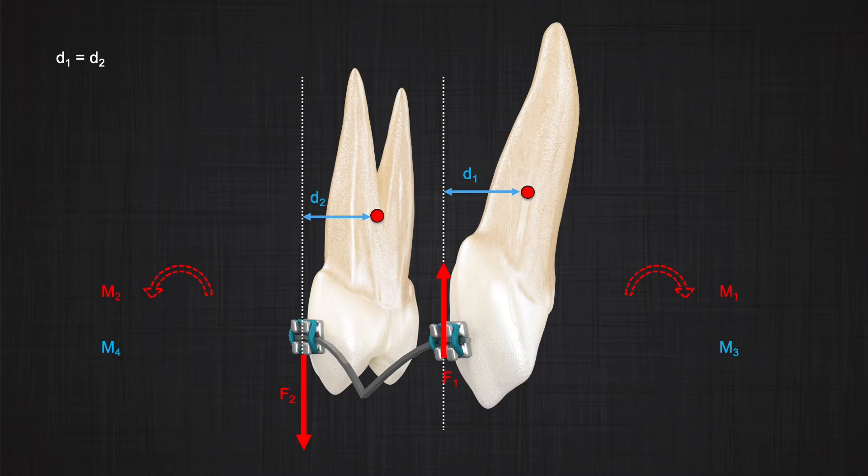Therefore, the resistance that each tooth receives from adjacent teeth would be equal and opposite. Under this condition, there would be no change in the third-order view or angulation of the teeth.